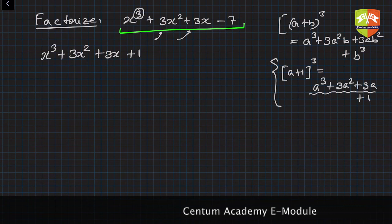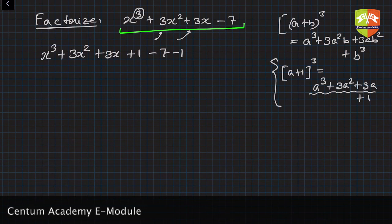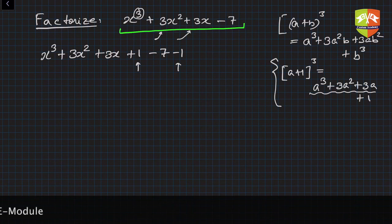Now you'll say if you add 1 you are changing the expression. Yes, correct, we are changing the expression. So to compensate, what do I need to do? Subtract that 1 from it. So I basically added 1 and subtracted 1 so that it becomes the same. And this was -7 anyways.